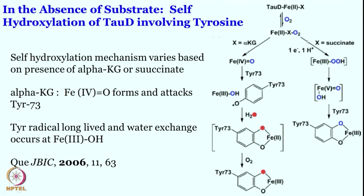This water exchange also implies that the stability and lifetime of the phenoxy radical is quite high. Unless this radical has sufficient lifetime, you would not be able to see this sort of exchange. The moment you know that this exchange is happening, you are certain the phenoxy radical is long-lived enough to allow the exchange and for the reaction to proceed. Of course, you will still get some 16O oxygenation, but the fact that 18O labeling can be found is indicative of two things: hydroxyl and water are exchanging, and the phenoxy radical is long-lived.